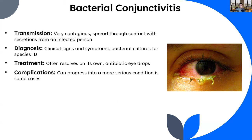You can spread bacterial conjunctivitis through contact with secretions from an infected person. Diagnosis is typically clinical signs and symptoms - you go to the doctor with those symptoms and they'll identify it as conjunctivitis. They may take bacterial cultures to figure out exactly what species it is. Quite often bacterial conjunctivitis will resolve on its own; they may prescribe antibiotic eye drops to help. It can progress into a more serious condition in some cases if not treated properly, or if an infection that doesn't start to resolve on its own doesn't end up getting treated.